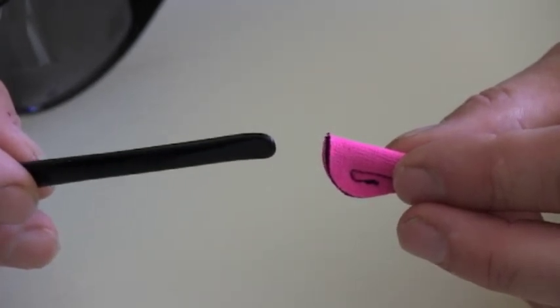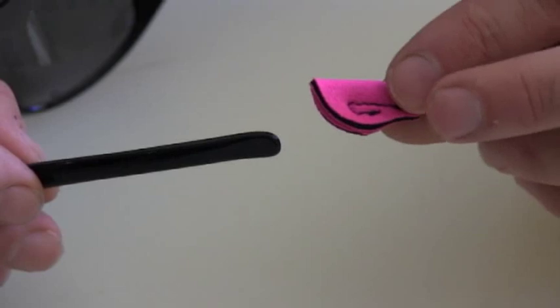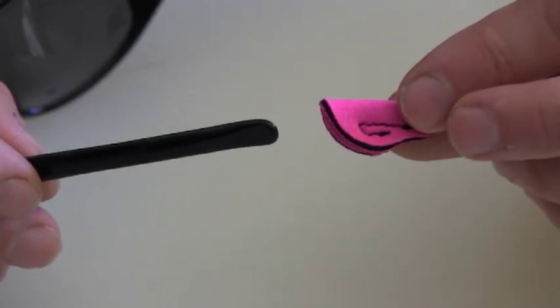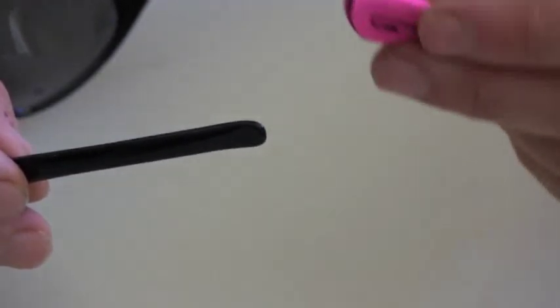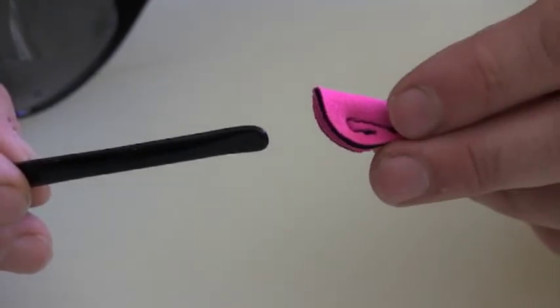Hi everybody, this is Jack with Wedgies getting ready to show you how to put a wedgie on your sunglasses. This is a pretty standard size temple arm right here and this is a standard size wedgie, a sewn pink wedgie.